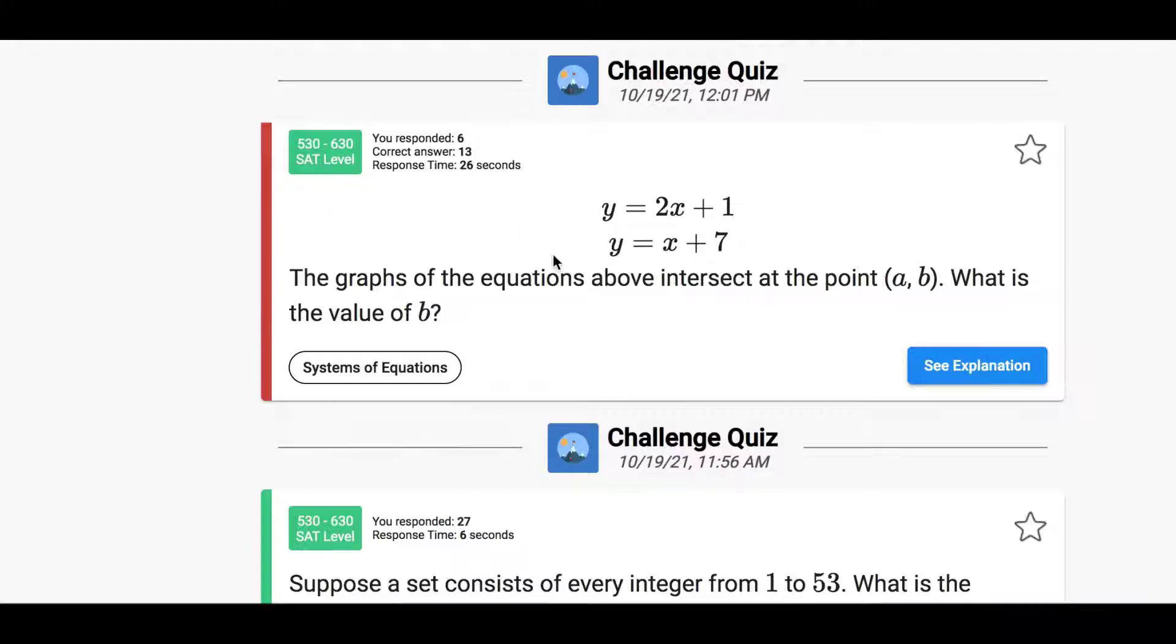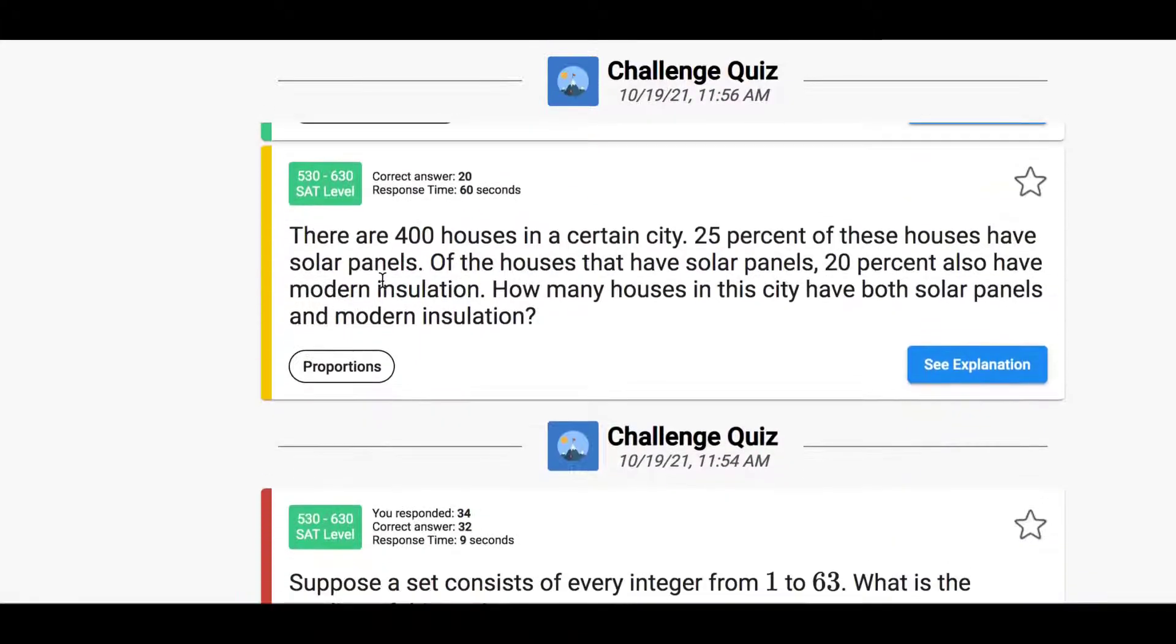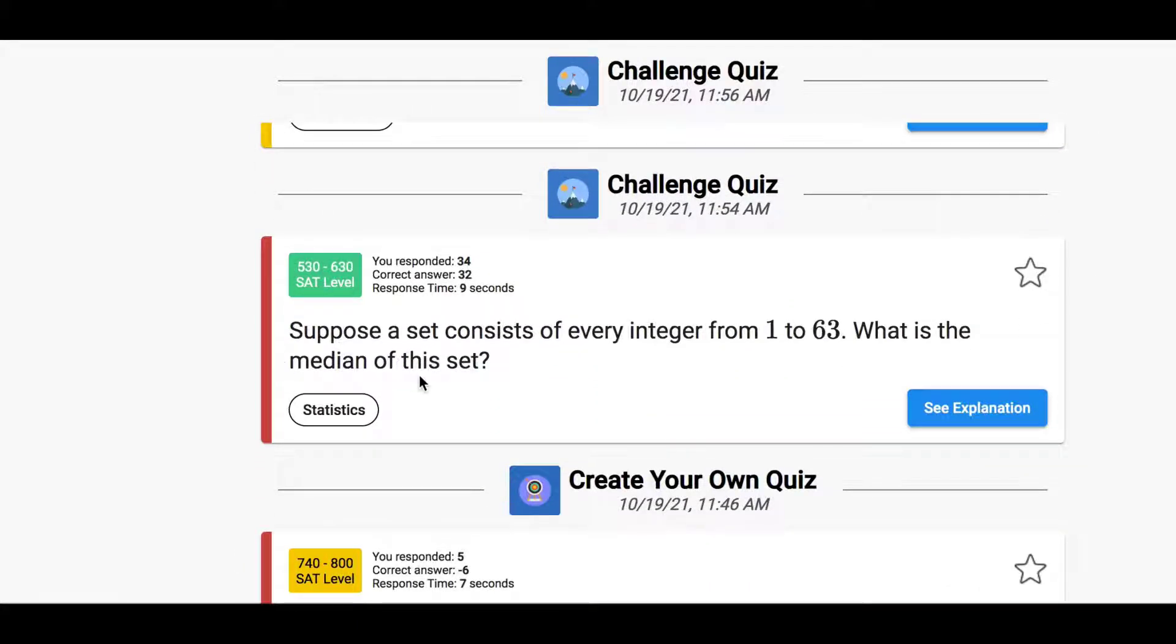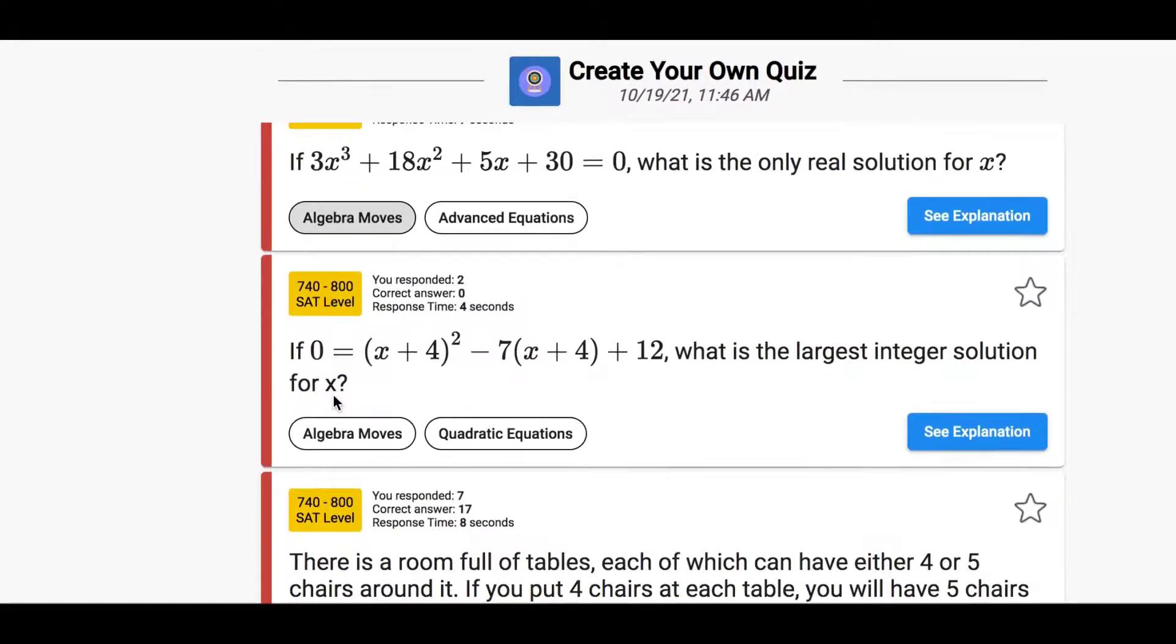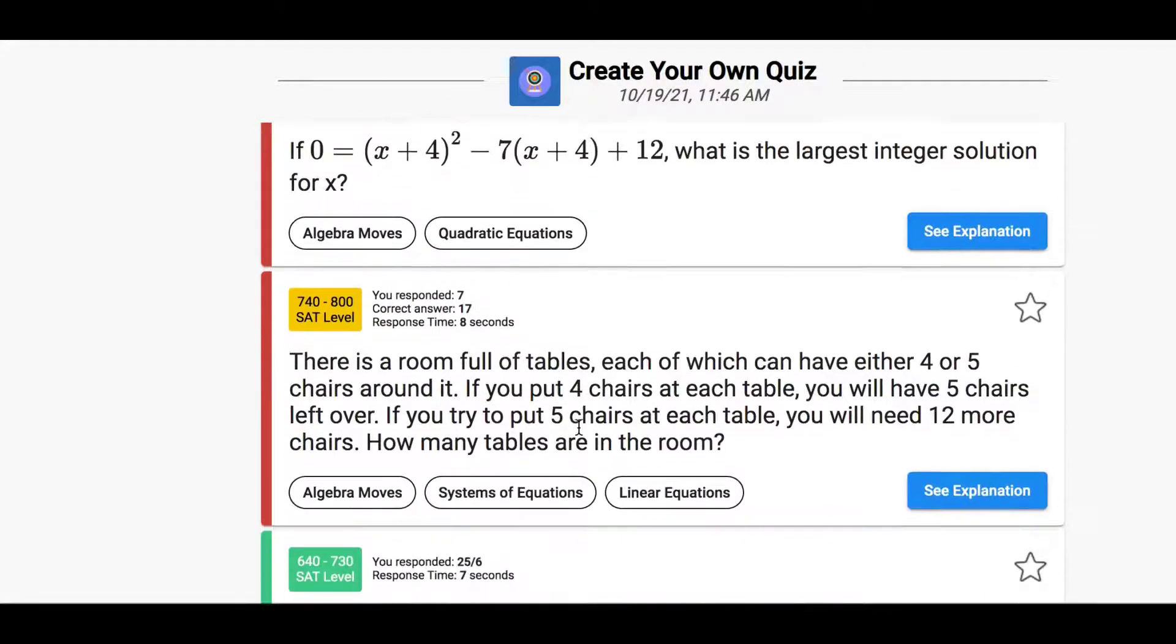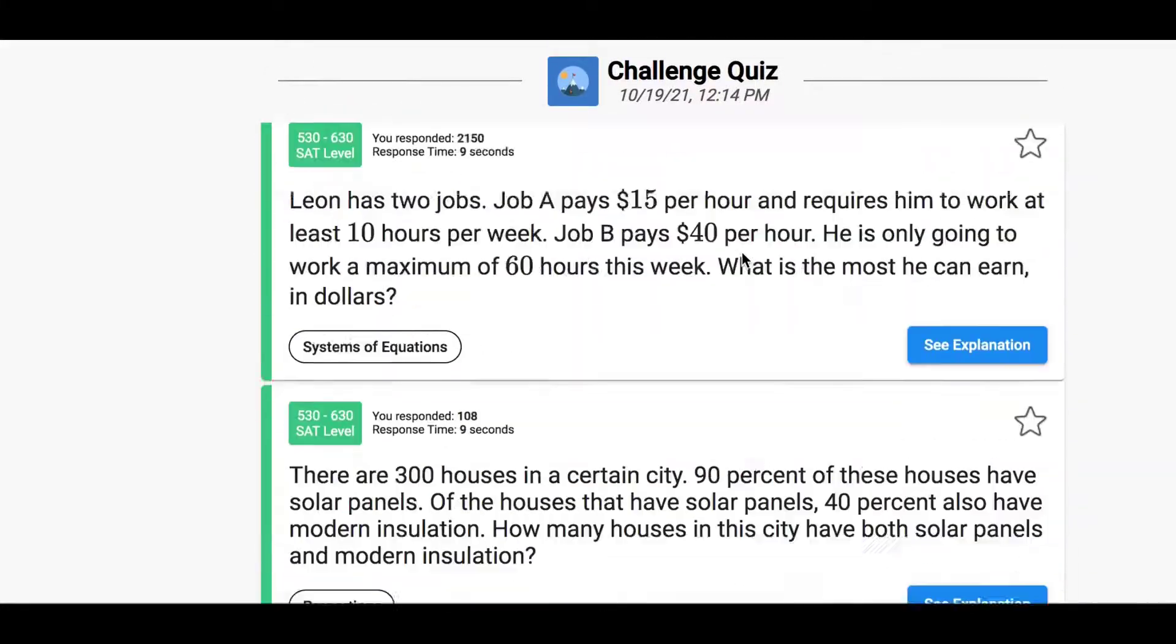Sometimes it'll be something easy where maybe they made a small mistake. It could be a timing issue. It could be something small that they've never learned, but you could teach them really quickly. Or it could be something really advanced and difficult like factor by grouping or use substitution or a very difficult word problem. In some cases, this will just be a quick review, and you can let them keep working on this in the background while you work on other things like reading or grammar. But sometimes you'll want to go into this more deeply.